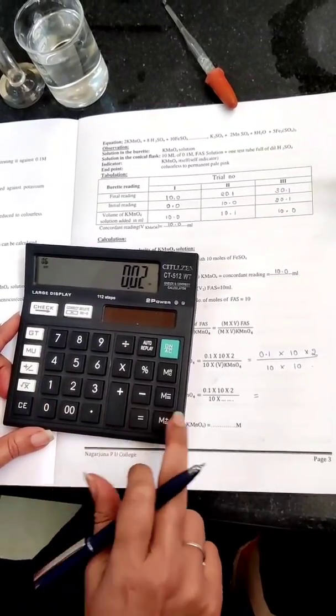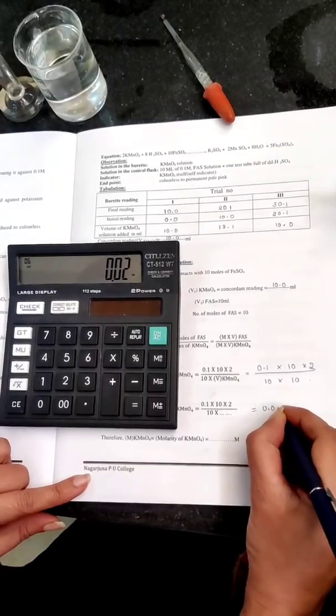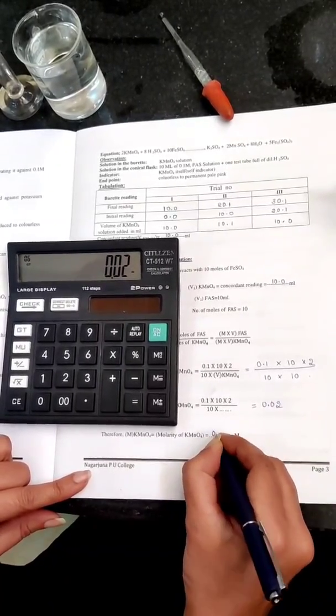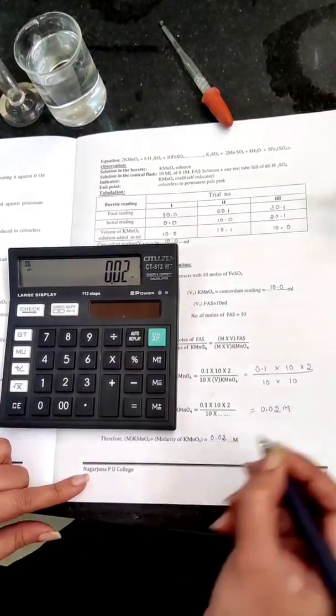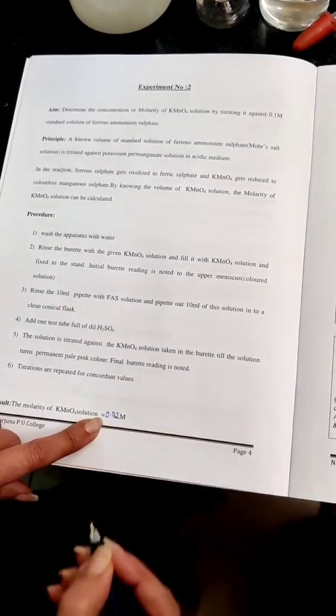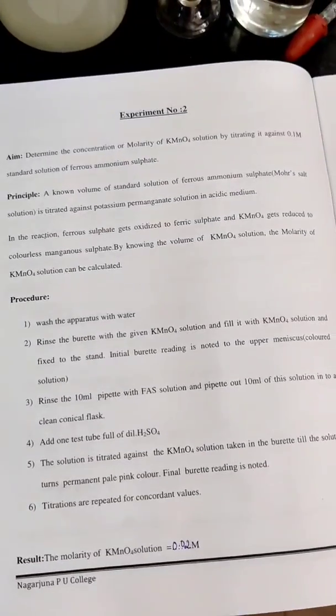That is what I am getting. You need to mention the unit. Write the final result. The molarity of KMnO4 solution equals 0.02 molar.